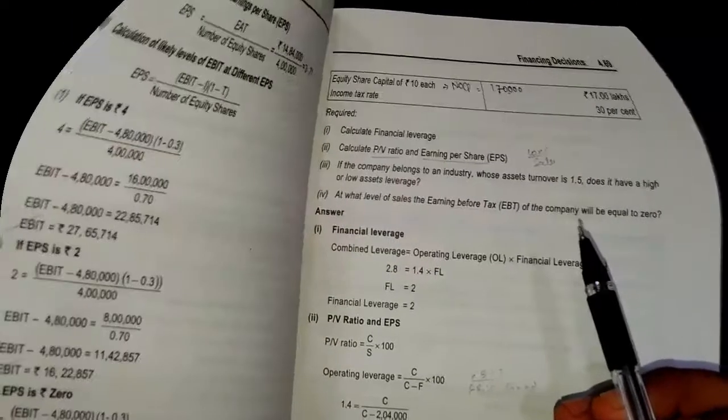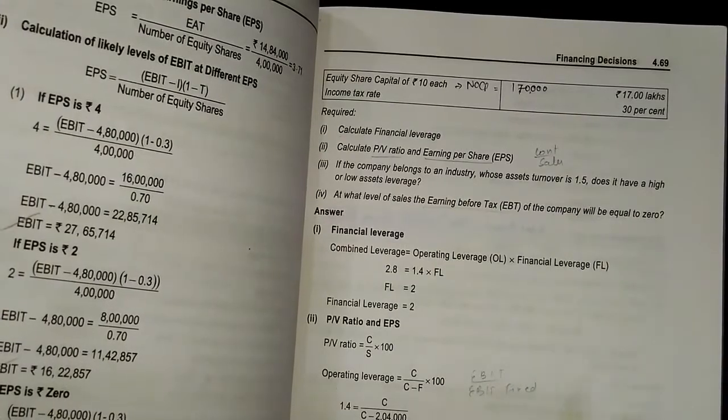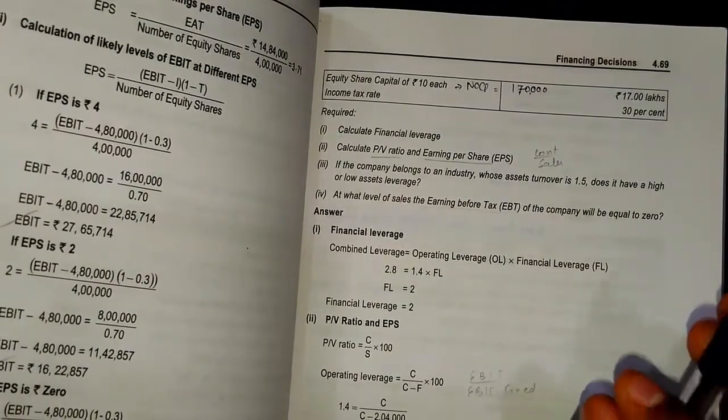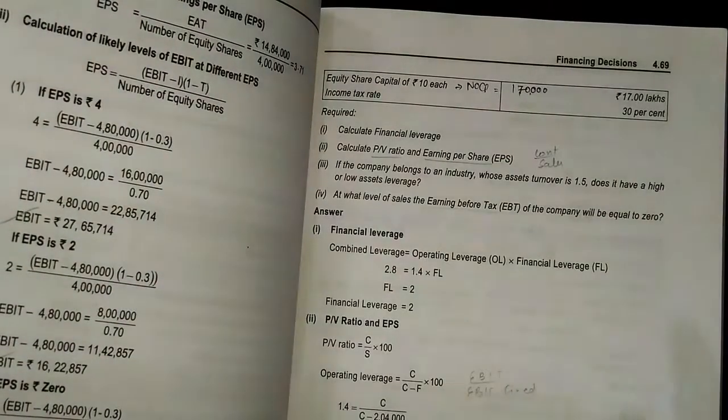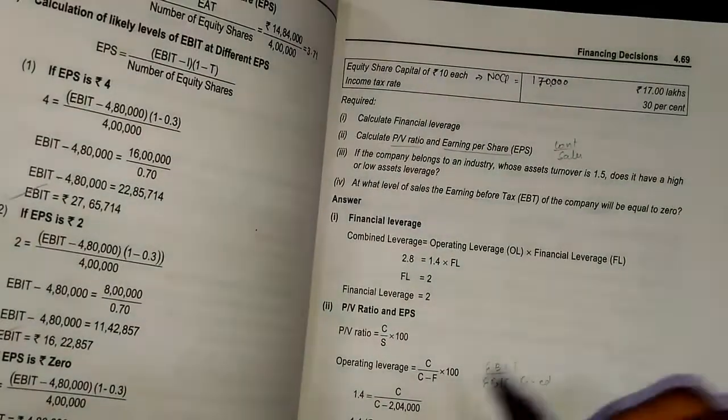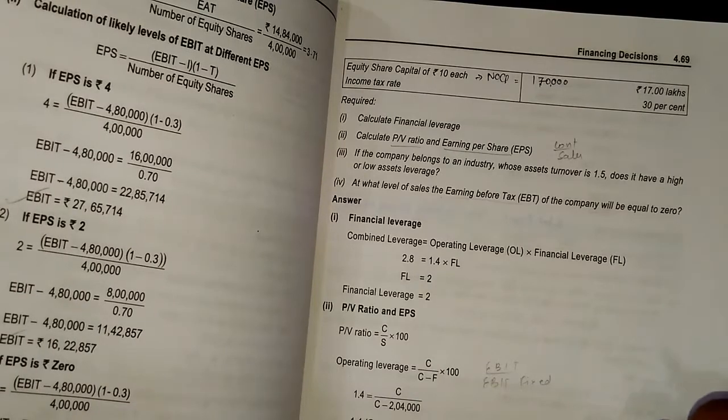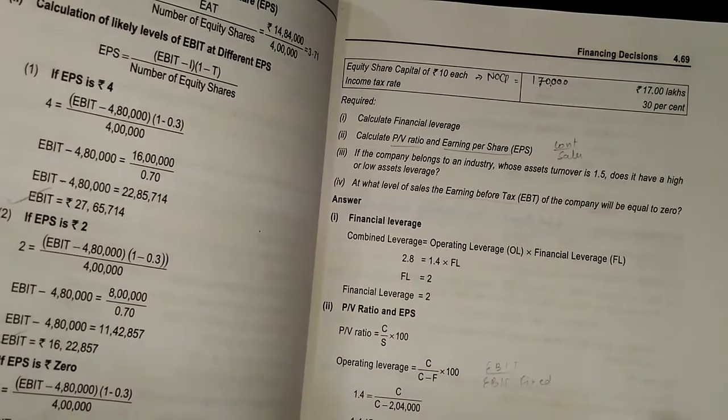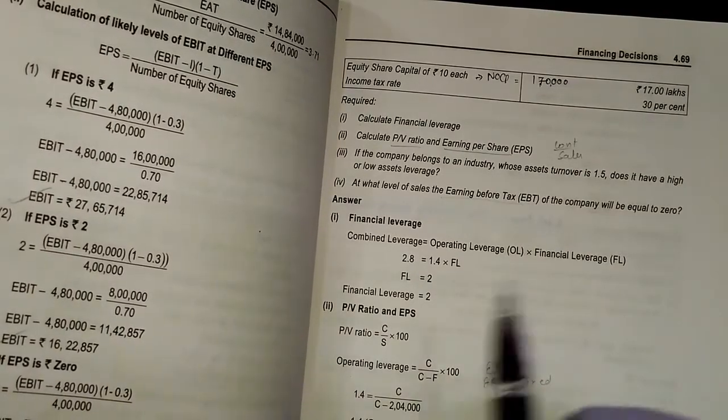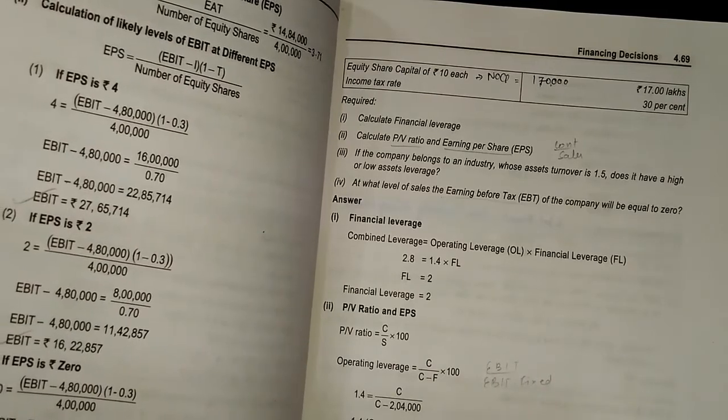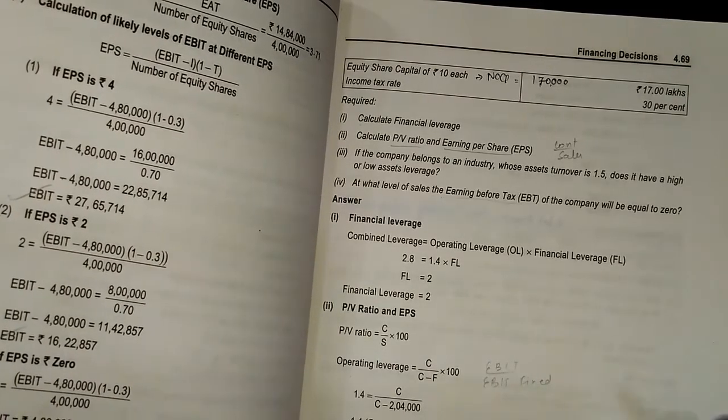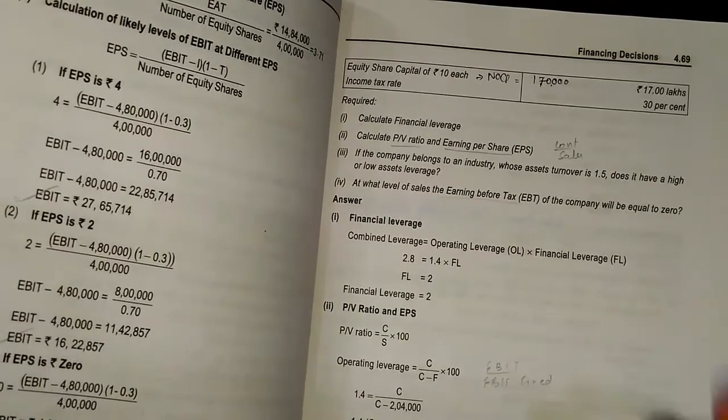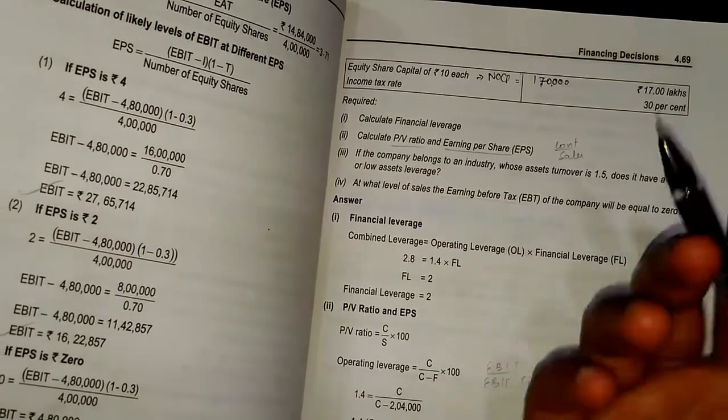In this ratio analysis chapter, the PV ratio formula is contribution divided by sales into 100. You can find out contribution since in the question the contribution is not directly given to us. You can find out contribution either by drawing the format, but ideally it is not right to draw the format. It will just consume 2 minutes, but I will show you a shortcut how to find out contribution.